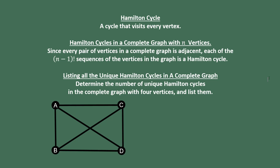We're going to begin with an unweighted graph and just practice listing all the unique Hamilton cycles. Determine the number of unique Hamilton cycles in the complete graph with four vertices and list them. Every sequence of edges is going to represent a Hamilton cycle. In this case, the number of vertices is four, so we know that there are going to be (n-1)! or (4-1)! Hamilton cycles. This would be 3!, which means there are going to be six different cycles.